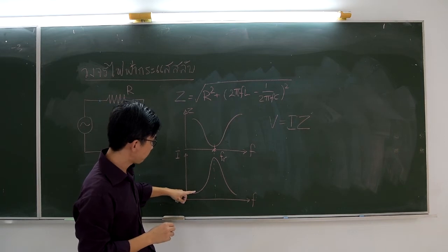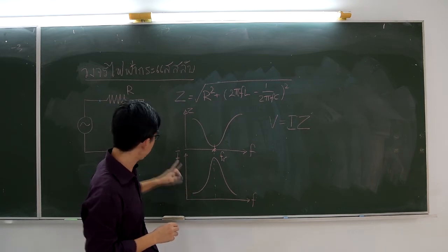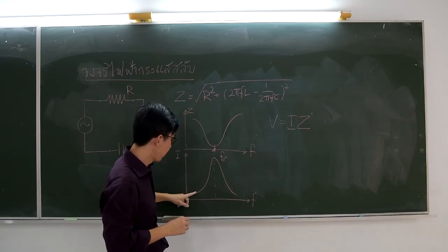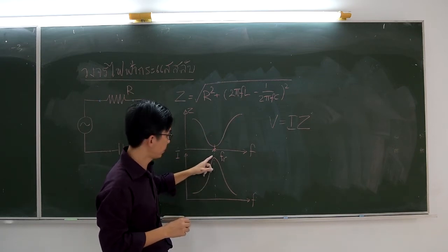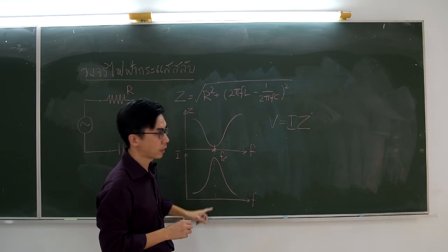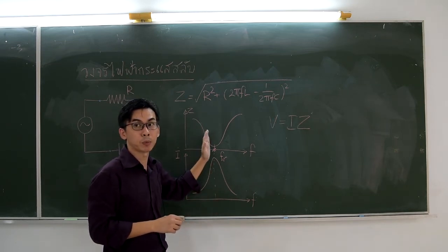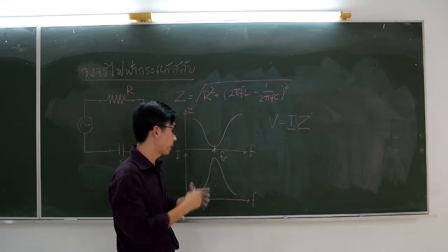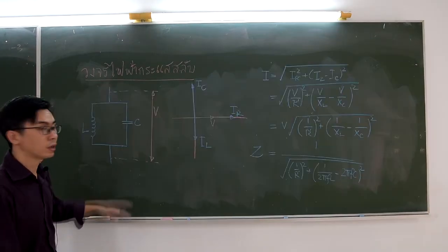This is how a radio receiver knows how to pick the right station. It is by adjusting the value of L and C to match with the frequency from the station.